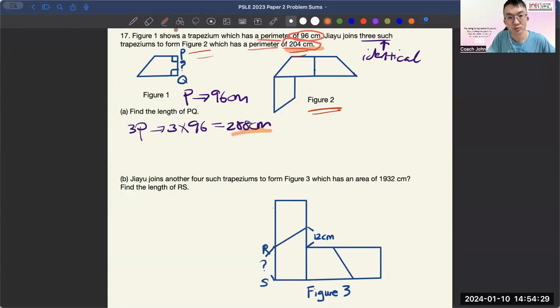And having said that, then it should be an apple to apple comparison. So at least let's have three of these together first. So when there are three of these, since the perimeter of one of this is 96 cm, so three of them will be three times 96 cm, which is 288 cm.